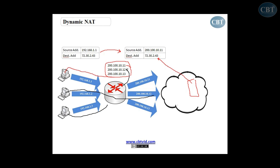Now, in Dynamic NAT, if you have a fourth computer that wants to go out and get access, it sends a packet to the router. The router refers to the pool, but in this case, the router has already assigned all three addresses to these three computers. So there is no more public address in the pool. When this computer refers to the router and the router cannot find any address, this computer cannot go out. It has to wait for one of the other three computers to finish its job with the internet and return the address to the pool, and then the router assigns that address to the fourth computer.